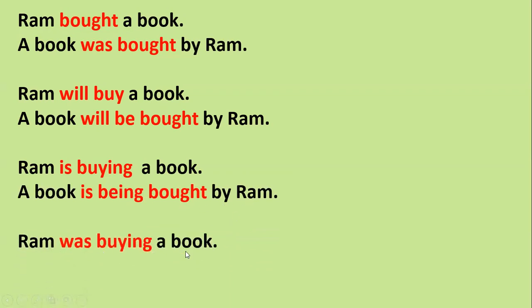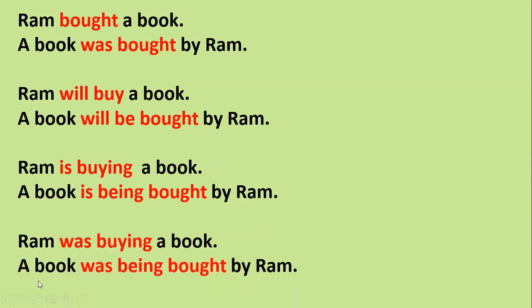For past continuous: 'Ram was buying a book.' The passive is: 'A book was being bought by Ram.' If the subject is plural 'books', then it becomes 'Books were being bought by Ram.'